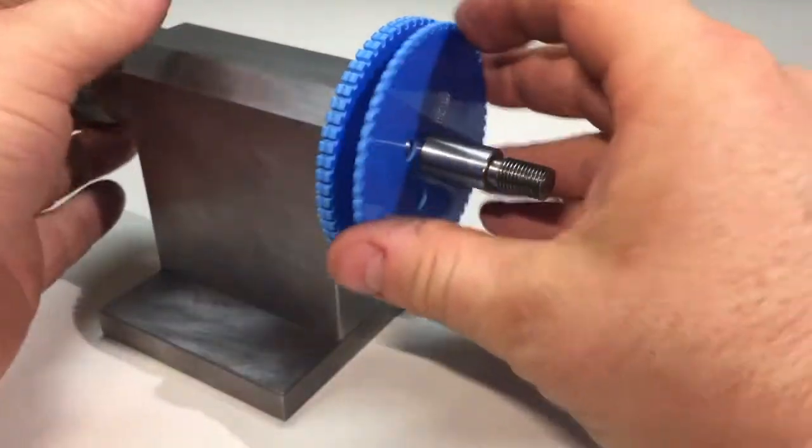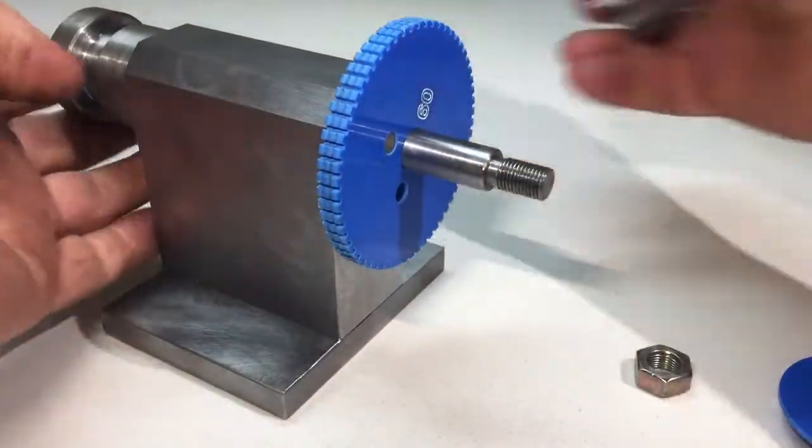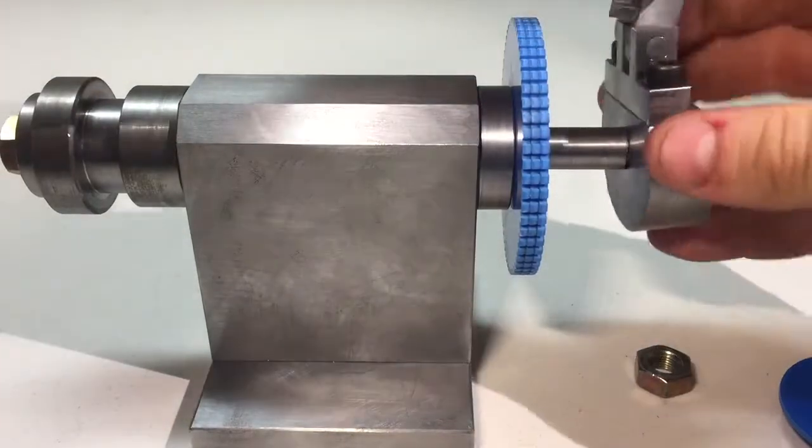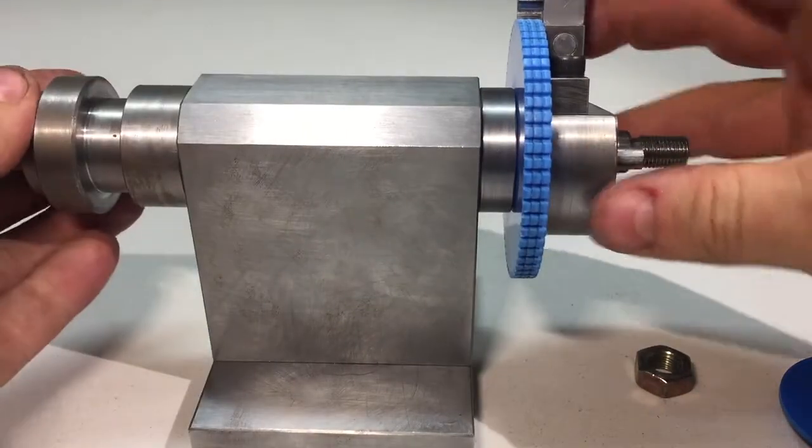That's the dividing plate. Now we need our arm with the detent spring loaded.